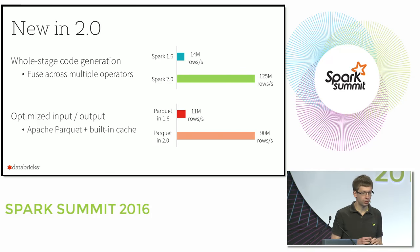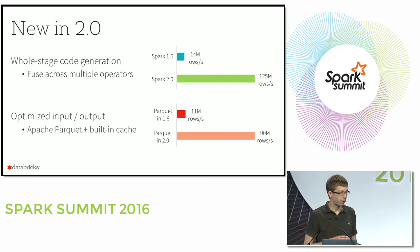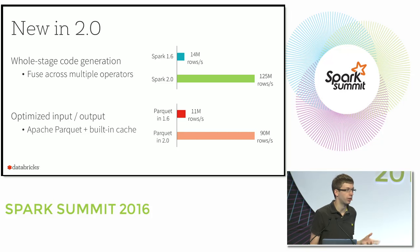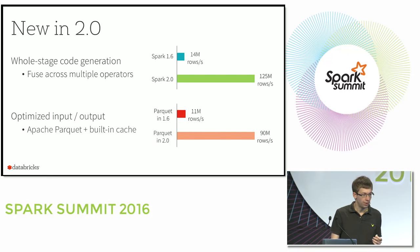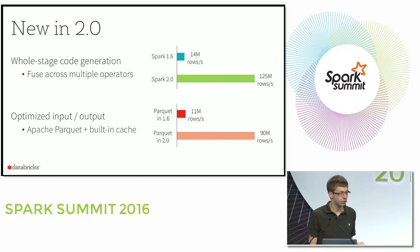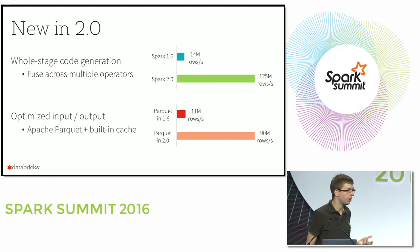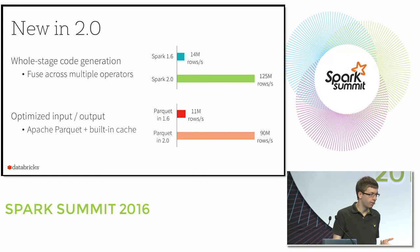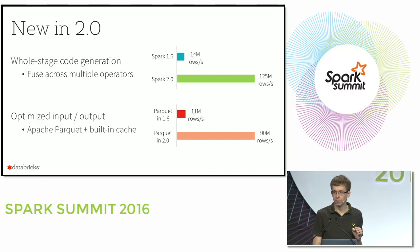In 2.0 we have really cool improvements to these structured APIs. First, we have whole-stage code generation, which can optimize across multiple operators and give speedups close to a factor of 10 depending on your query. We also have much faster input and output from Apache Parquet and from the built-in cache. These improvements immediately apply to any programs you have using these APIs.